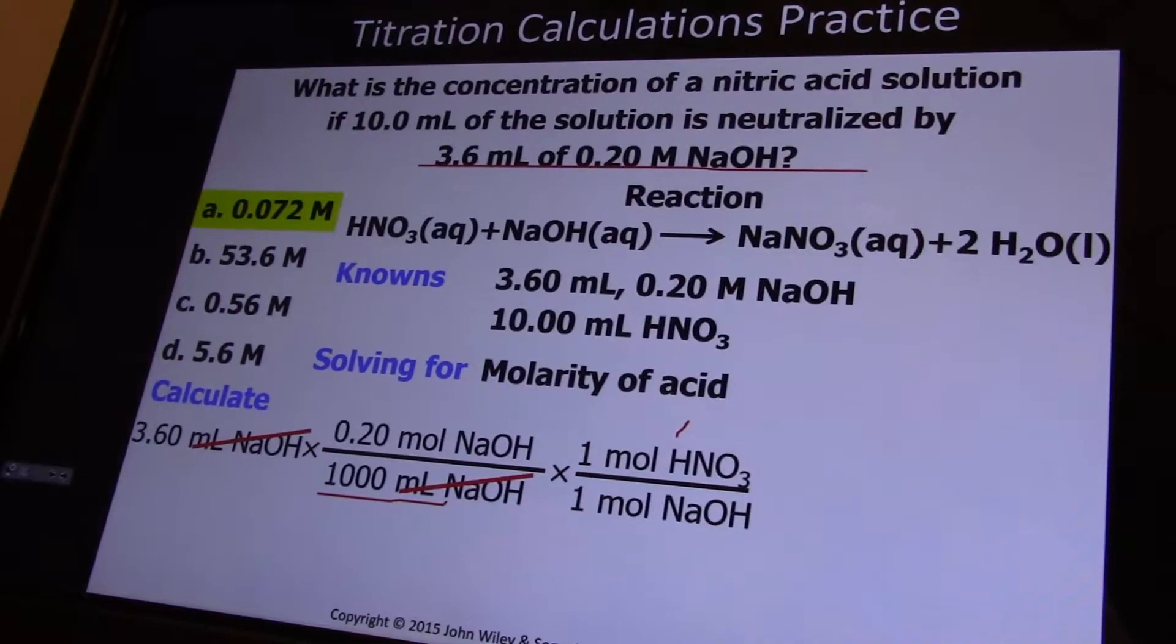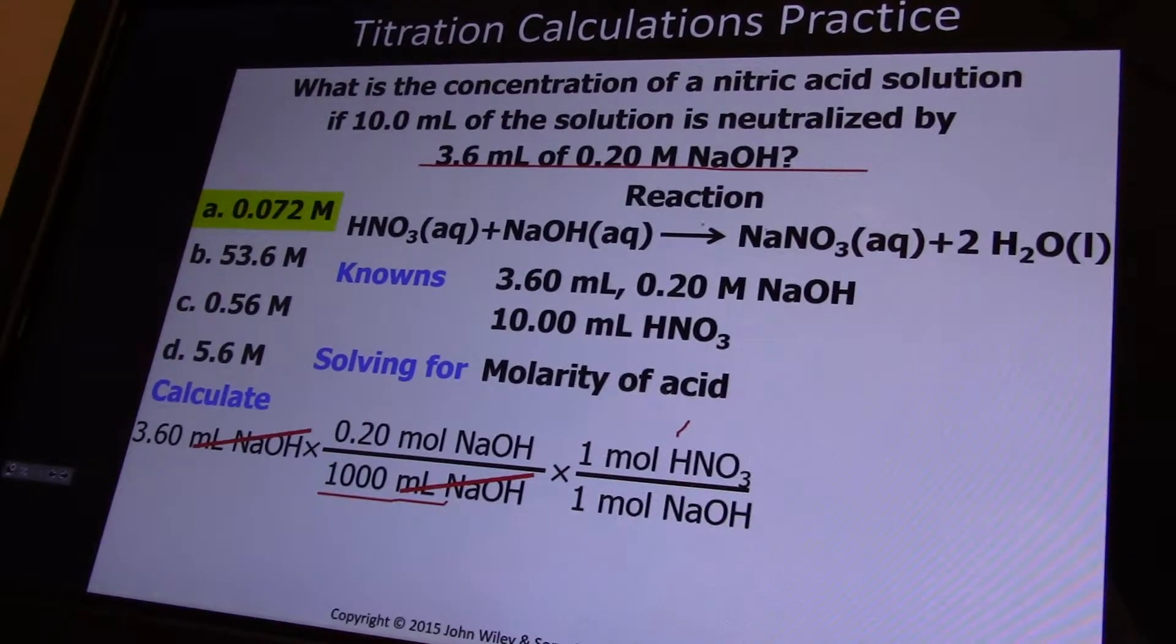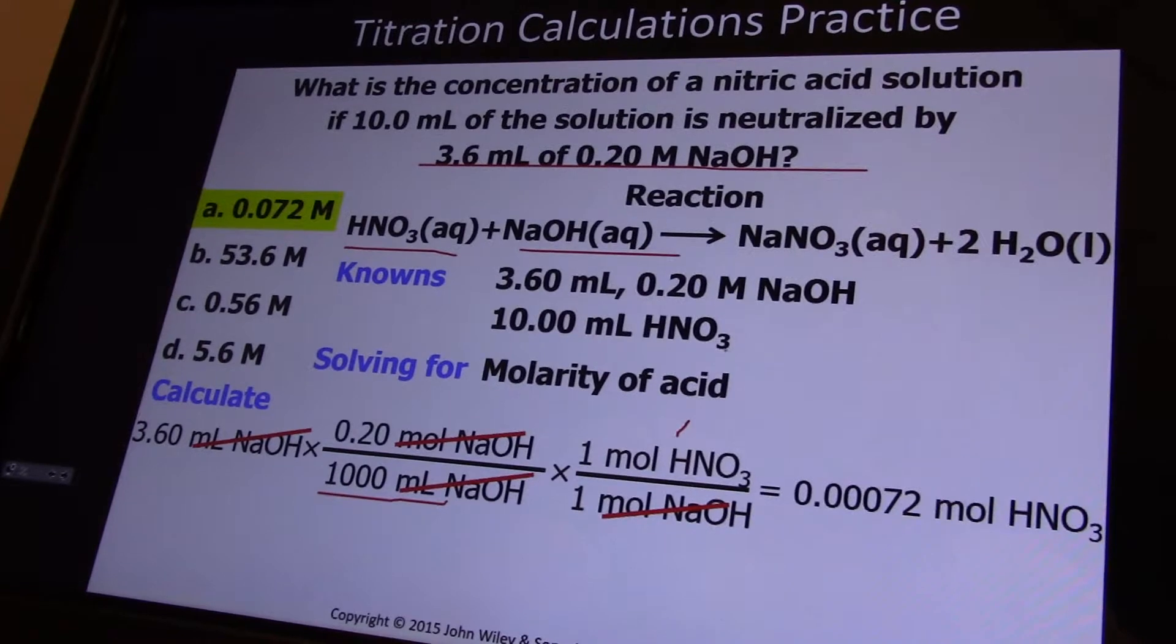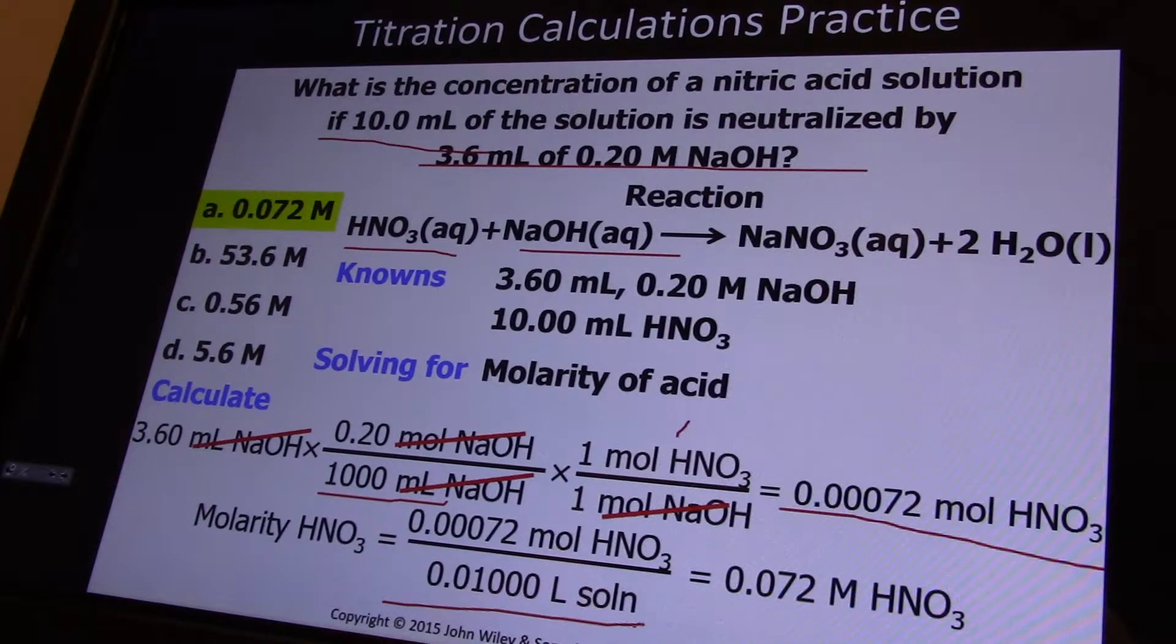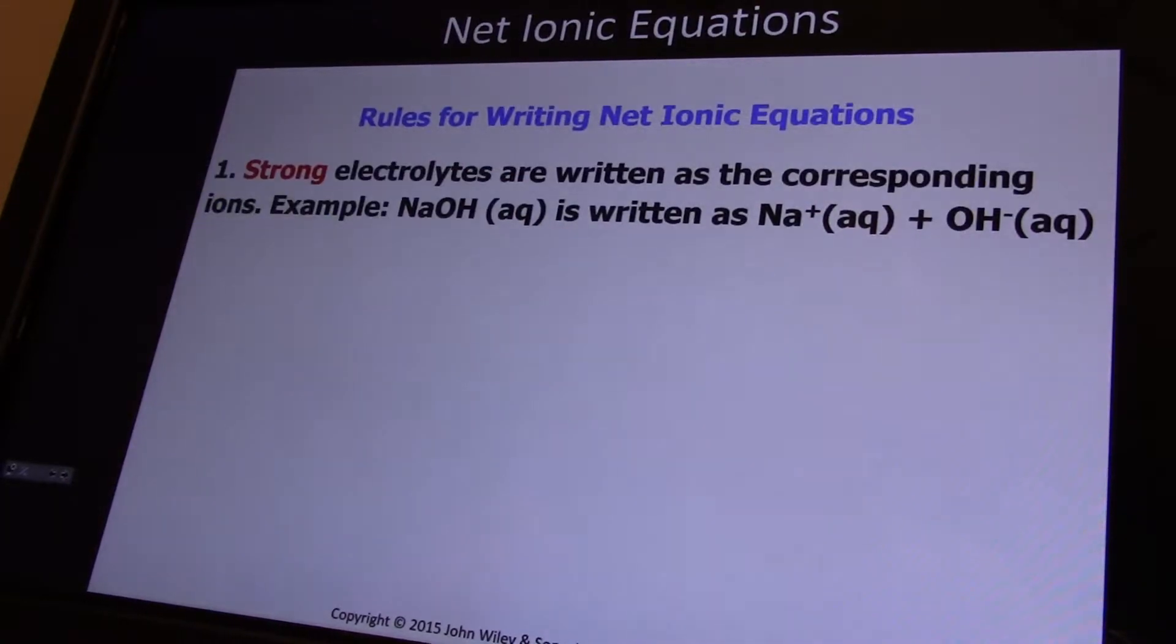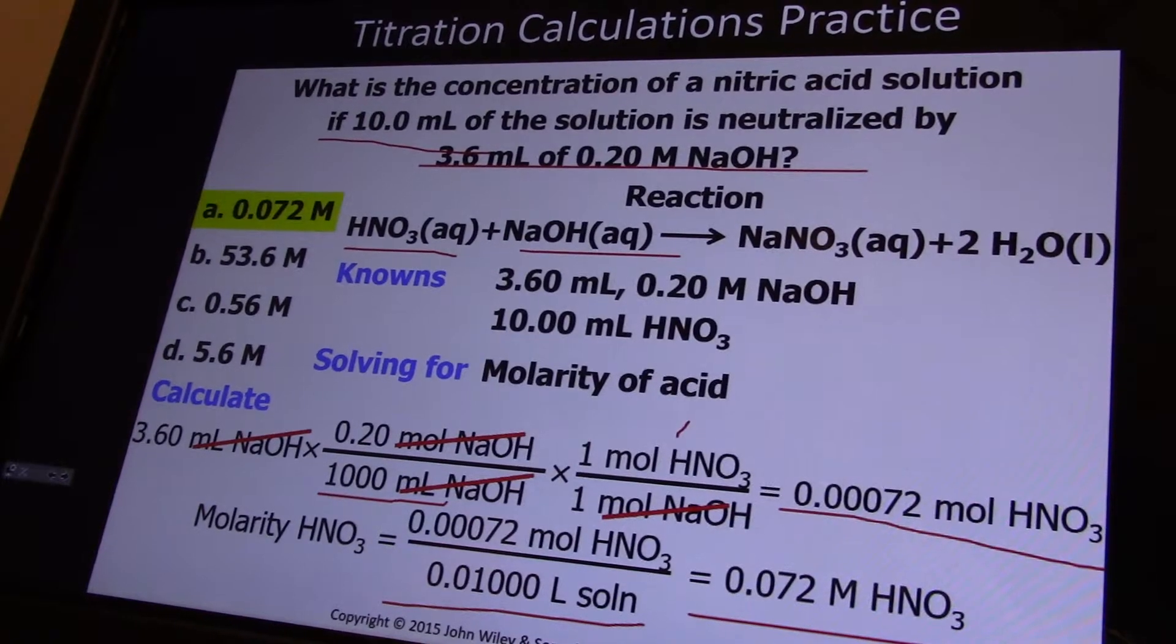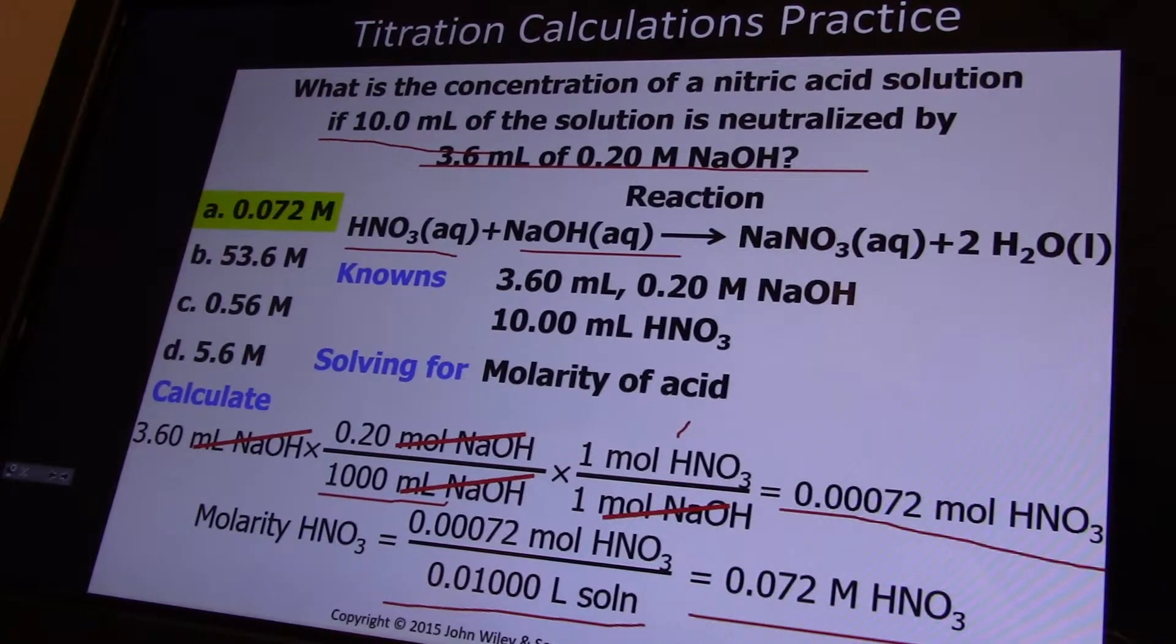Now stoichiometry - it's a one-to-one reaction. One sodium hydroxide reacts with one nitric acid. So we know how many moles of nitric acid would neutralize this much sodium hydroxide. It was in 10 milliliters, so that's where this 0.010 liters comes from. Our nitric acid would have been 0.072 molar in concentration.